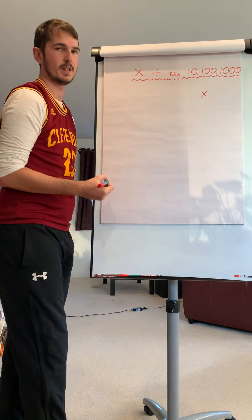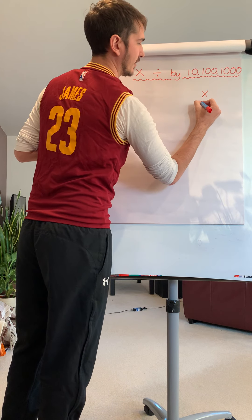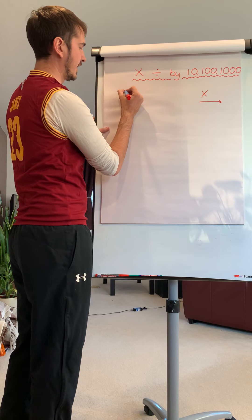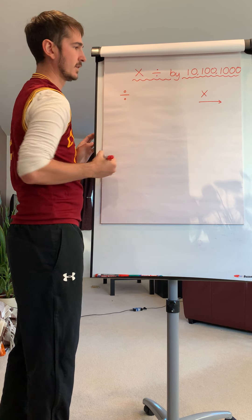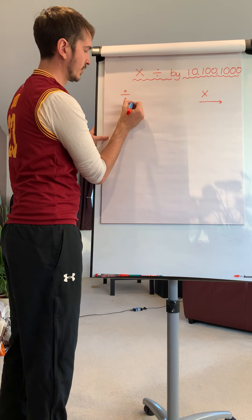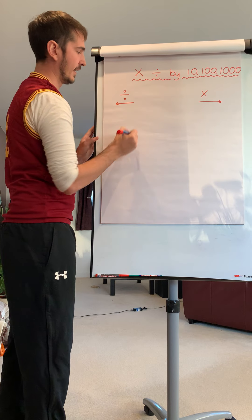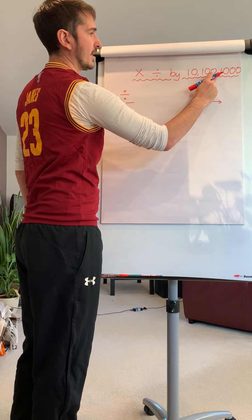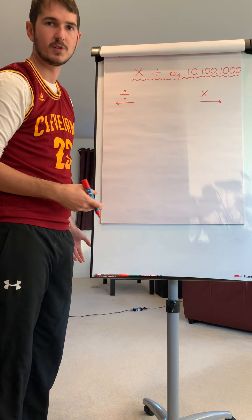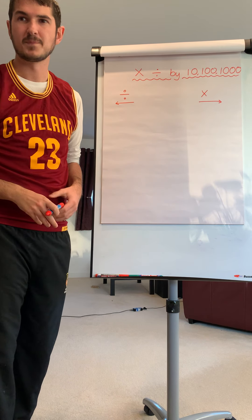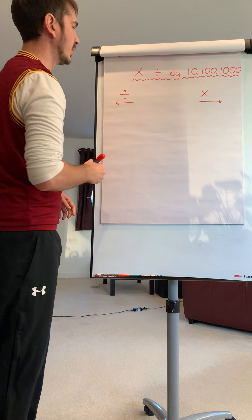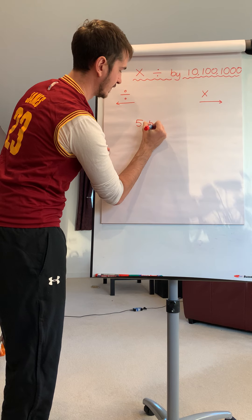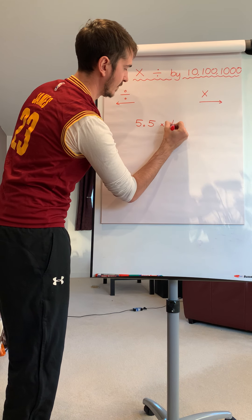Remember, if we are multiplying, we need to move our decimal point to the right. And if we are dividing, we need to move our decimal point to the left. However many zeros there are is how many times we're going to move our decimal place.